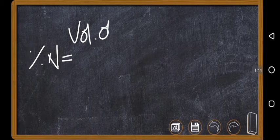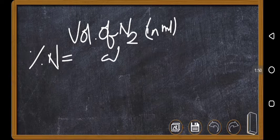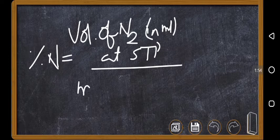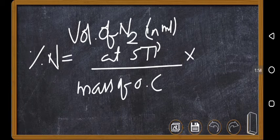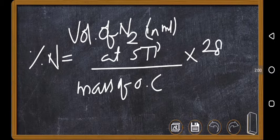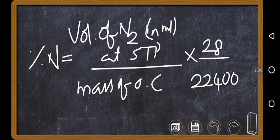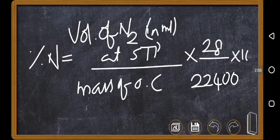So, the formula is percentage of nitrogen equals volume of nitrogen in milliliters at STP that you got divided by mass of organic compound. How much you have taken, times 28, this is the molecular mass of nitrogen, divided by 22,400, this is the volume of any gas at STP conditions, times 100.